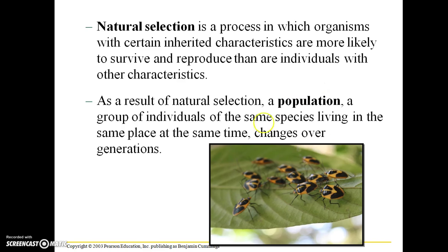A population can be a group of animals, a group of plants, or a group of bacteria. They just have to be the same species, because if they're not the same species they're not going to be interbreeding, and that is not going to affect natural selection. They also have to be at the same place, because they're not going to encounter one another to interbreed if they're not at the same place. And of course they have to live in the same time period.